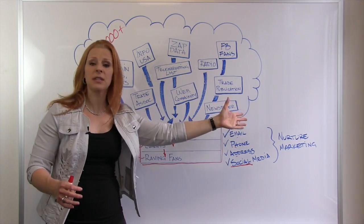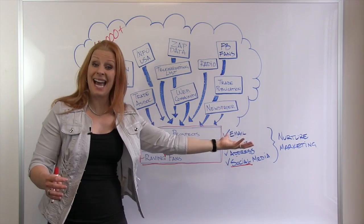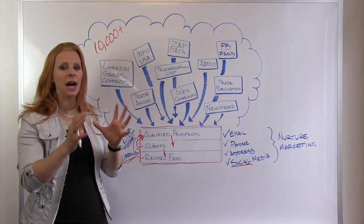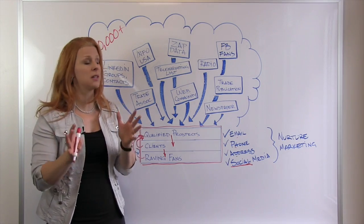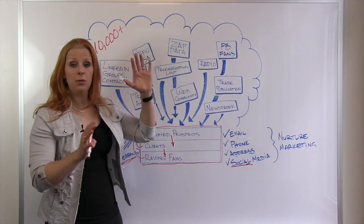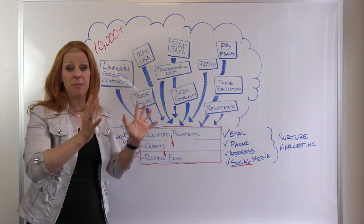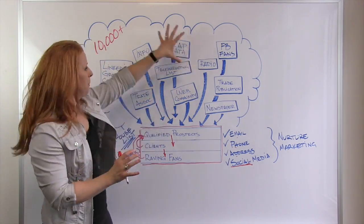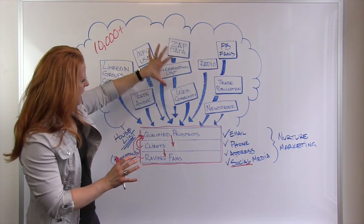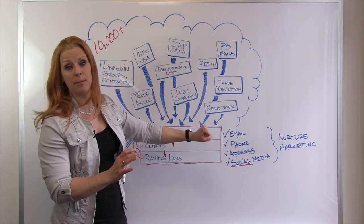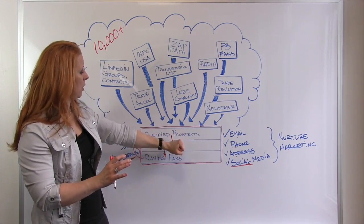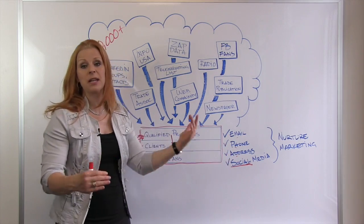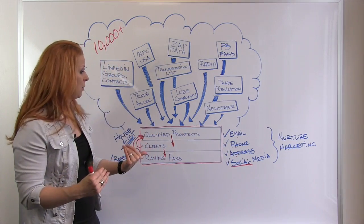Maybe you rent a telemarketing list or get an InfoUSA list and do a direct mail campaign — people who respond get added to your list. Trade associations, LinkedIn, et cetera. If you're trying to reach newspaper readers, you'd probably run an ad. The key is using direct response marketing with the appropriate media — whether it's email, direct mail, ads, or online — to pull these people from the masses and get them to come forward and say they're interested, they're a qualified prospect, and give you their email, phone number, and address so you can sell to them.